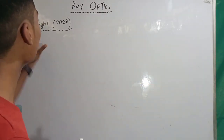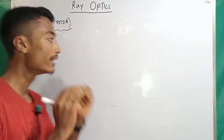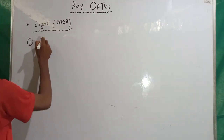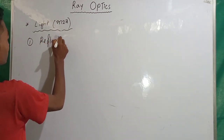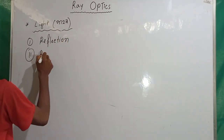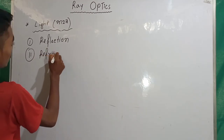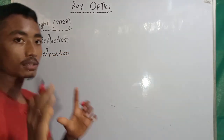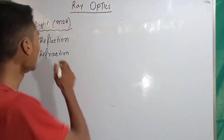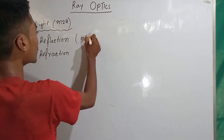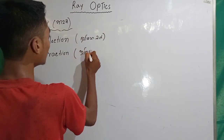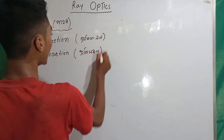The main topic — the first topic — is light. The first point is reflection. The second point is also reflection.